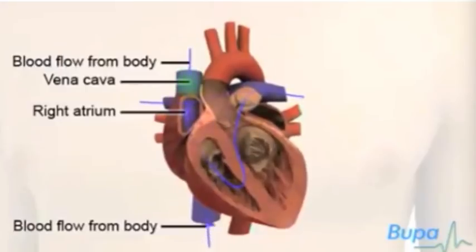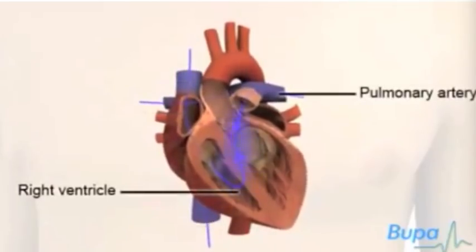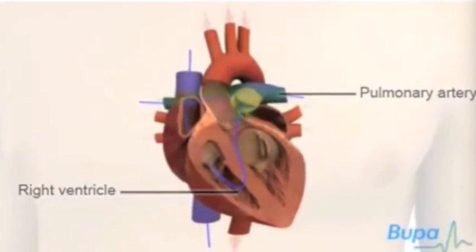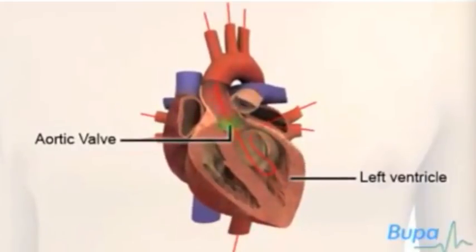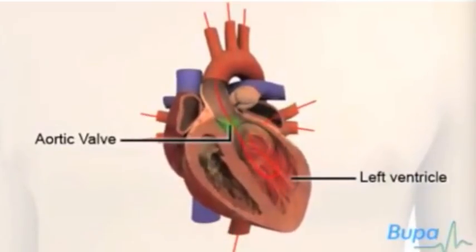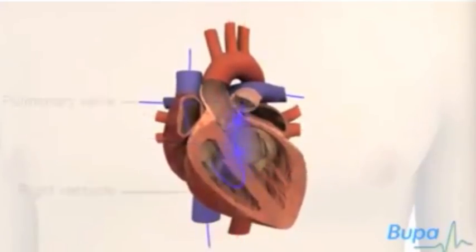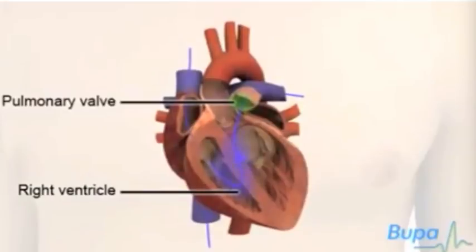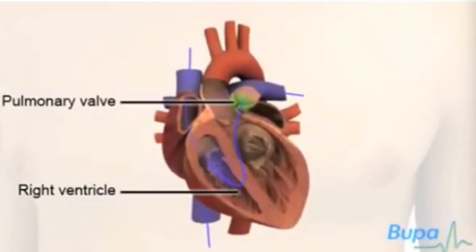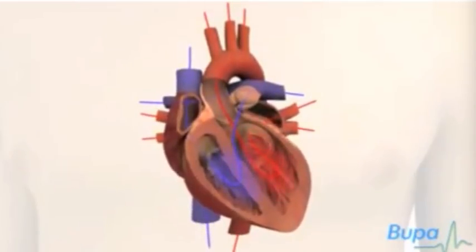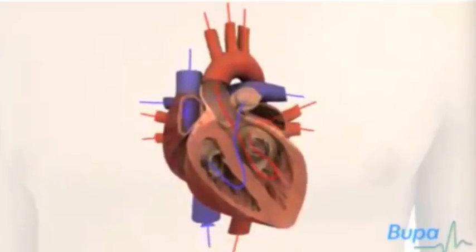The right ventricle pumps blood into the pulmonary artery and back to the lungs to receive oxygen. The aortic valve at the exit of the left ventricle stops blood from passing back into the ventricle. The pulmonary valve at the exit of the right ventricle also prevents backflow. This flow doesn't happen automatically but through contractions generated by electrical stimuli.